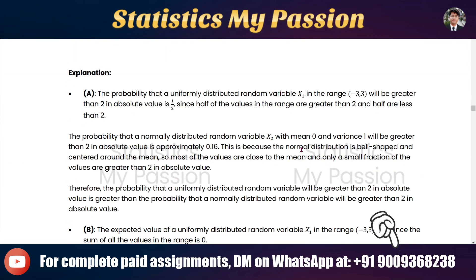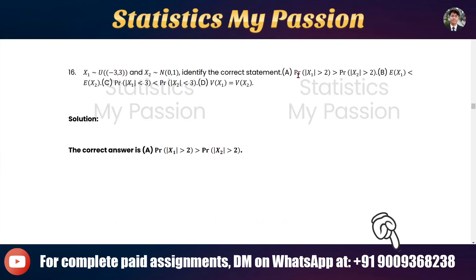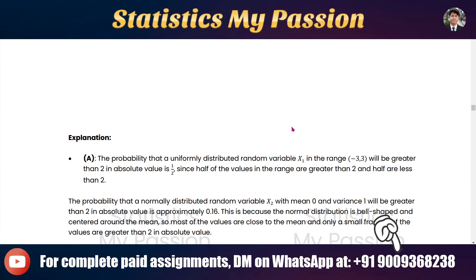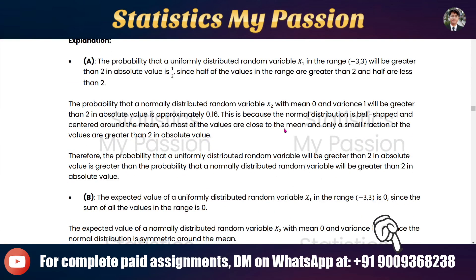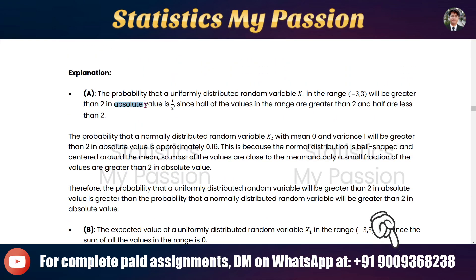The explanation is that option A says the following: The probability that a uniformly distributed random variable x1 in the range -3 to 3 will be greater than 2 in absolute value. You need to learn the absolute value concept.